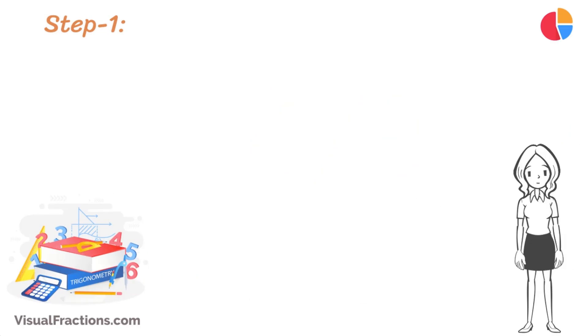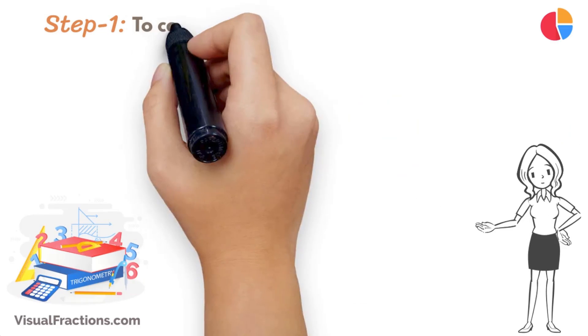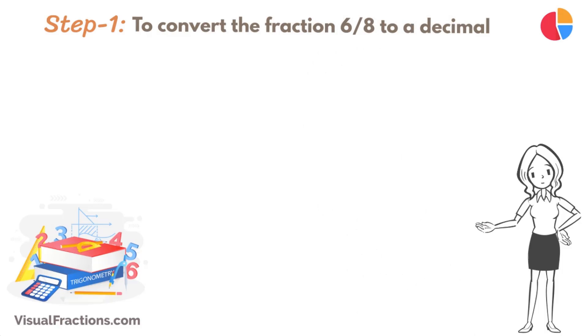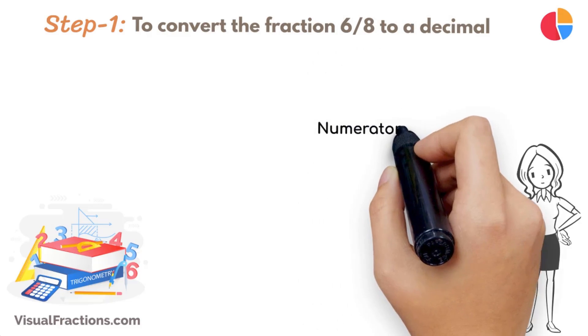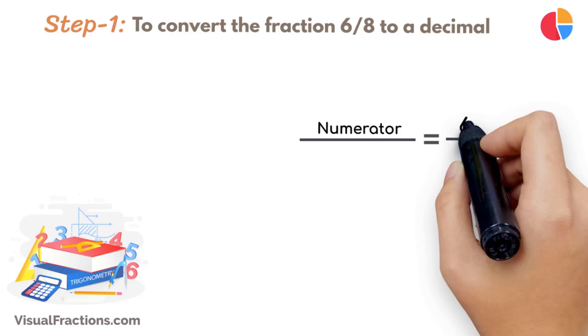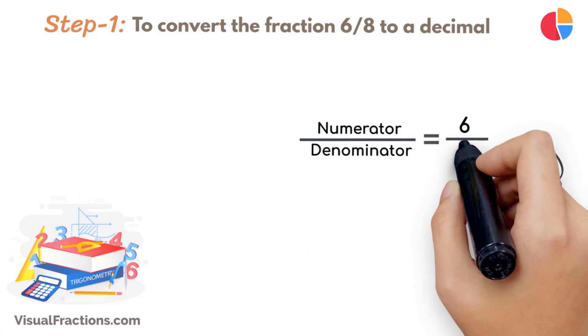The first step in converting the fraction 6 eighths to a percent is to convert this fraction to a decimal. We do this by dividing the numerator, the top number, which is 6, by the denominator, the bottom number, which is 8.